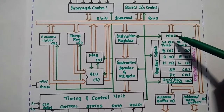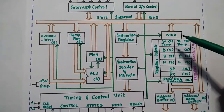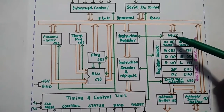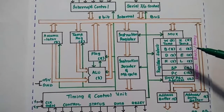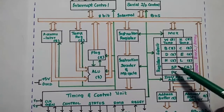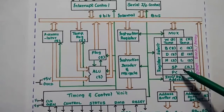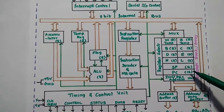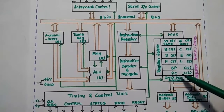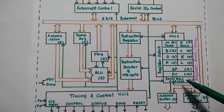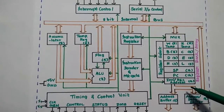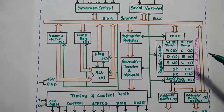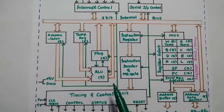A multiplexer is used to multiplex the lower byte of address lines and the data lines. The next register is SP, the stack pointer, which is a 16-bit register used for stack-related operations. Then there is the program counter (PC), a 16-bit register used to store the address of the next instruction to be executed by the CPU.